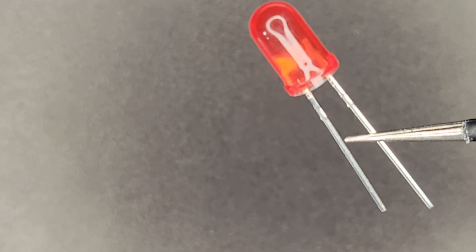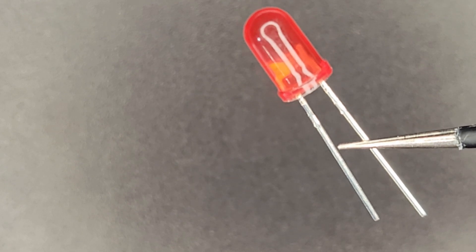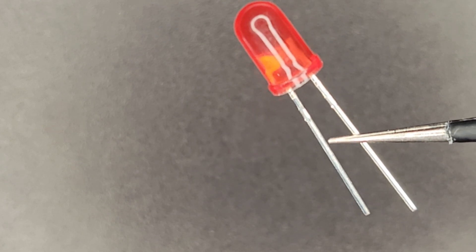You can see that one of the legs is longer than the other. That means it's a positive terminal and that's the side that you need to make sure receives a positive voltage.